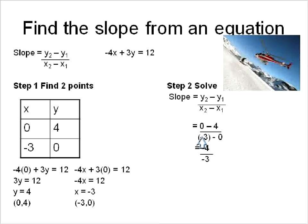In this case, 0 minus 4 is negative 4. Negative 3 minus 0 gives me negative 3. And when you have a negative divided by a negative, it'll give you a positive result. So my final slope is actually a positive 4 over 3.